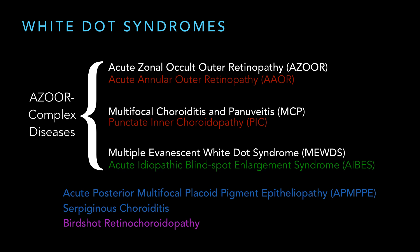Once you kind of think of these, I like to separate them out. That helps me to sort of attack the diagnosis. Oh, by the way, we just gave you that nice definition of a white dot syndrome — well, three of these don't even have white dots: AZOR, AAOR, and AIBES. So it's really not very fair. Some people call these inflammatory chorio-retinopathies of unknown etiology. That's a mouthful, which is why I still call them white dot syndromes.